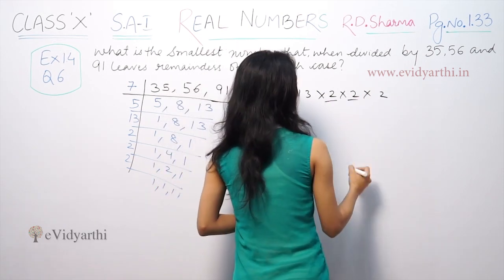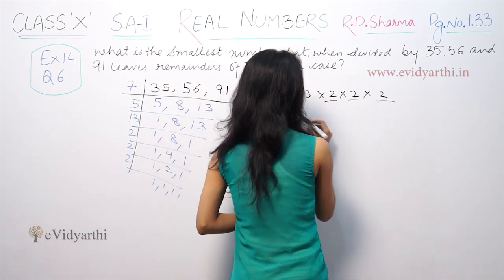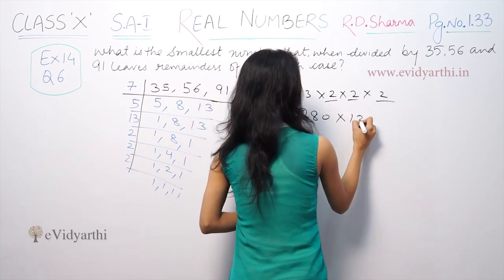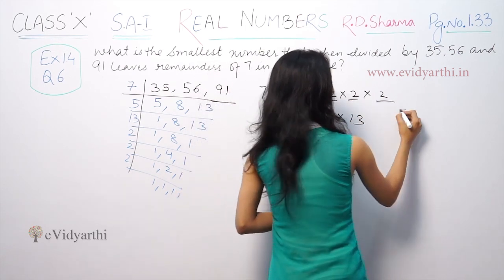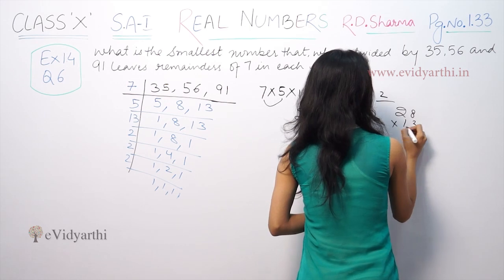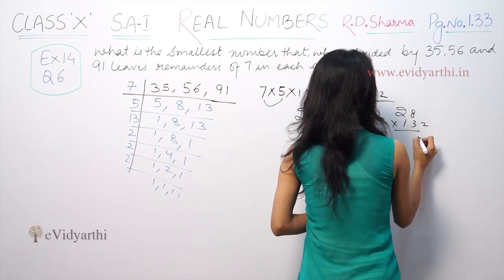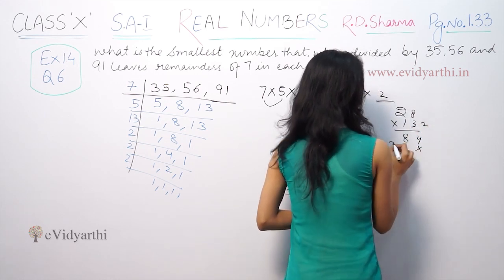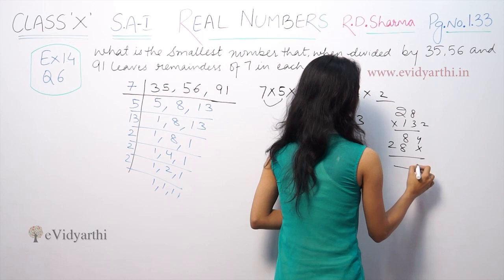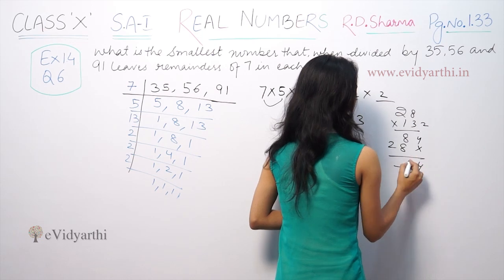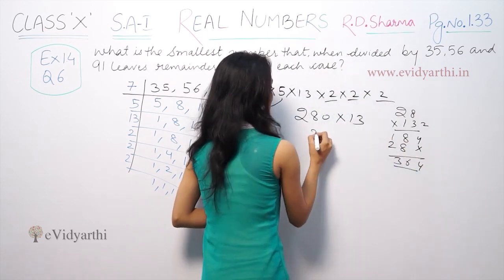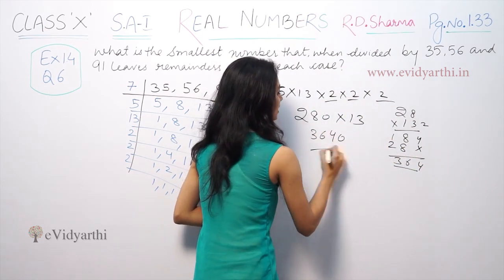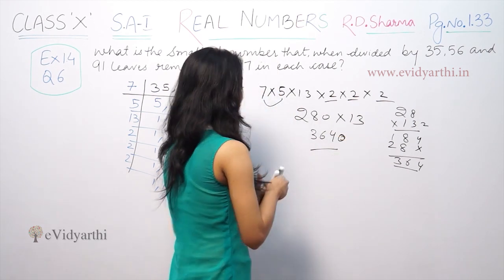So 280 × 13: we calculate 28 × 13 = 364, therefore 280 × 13 = 3640. So the LCM of 35, 56, and 91 is 3640.